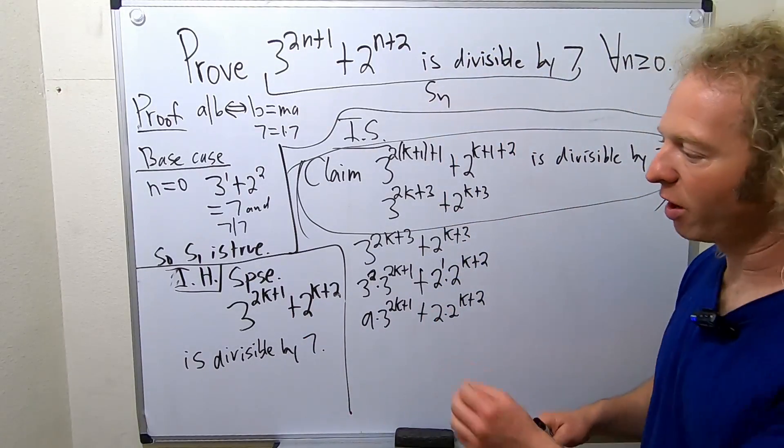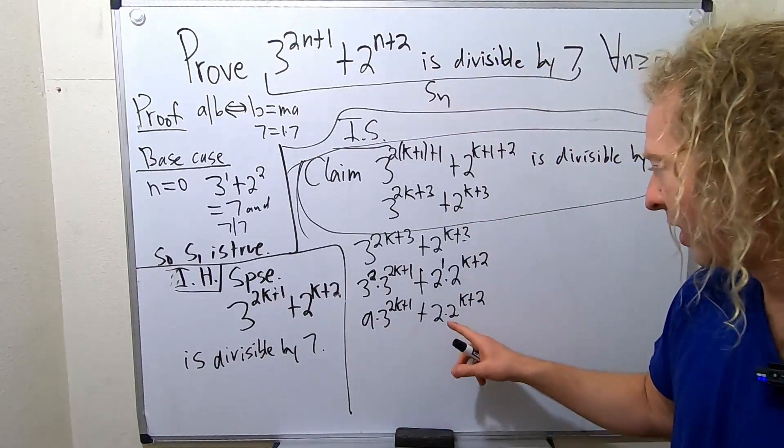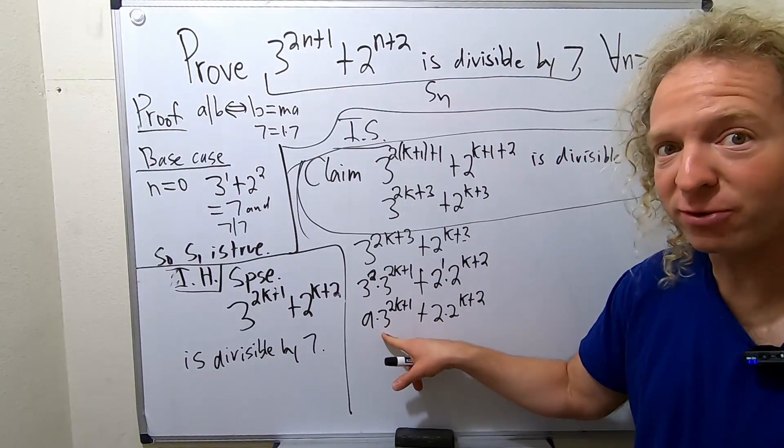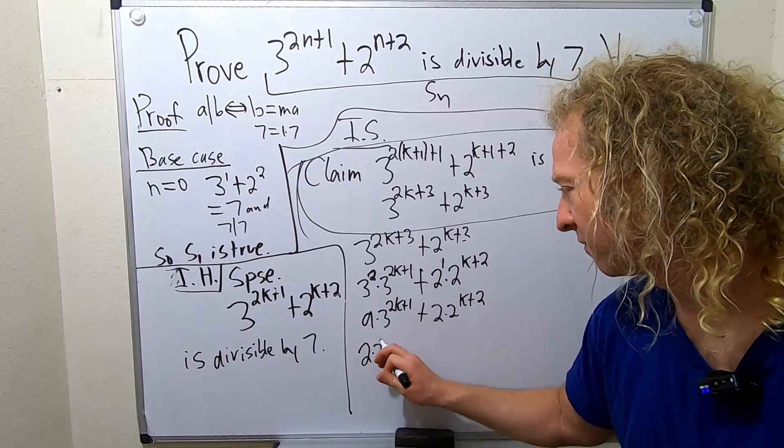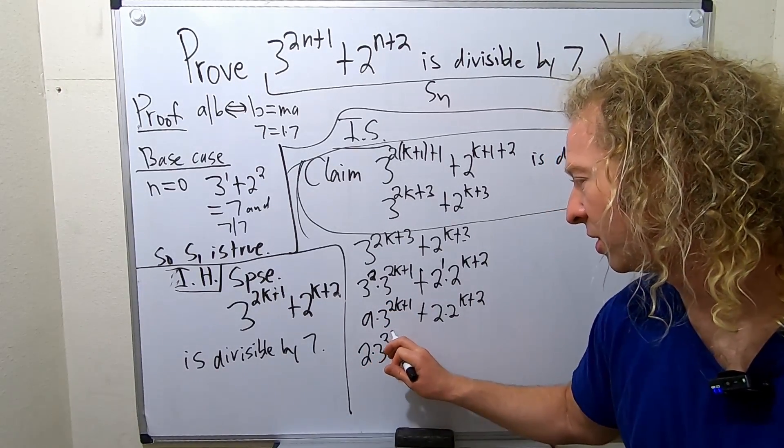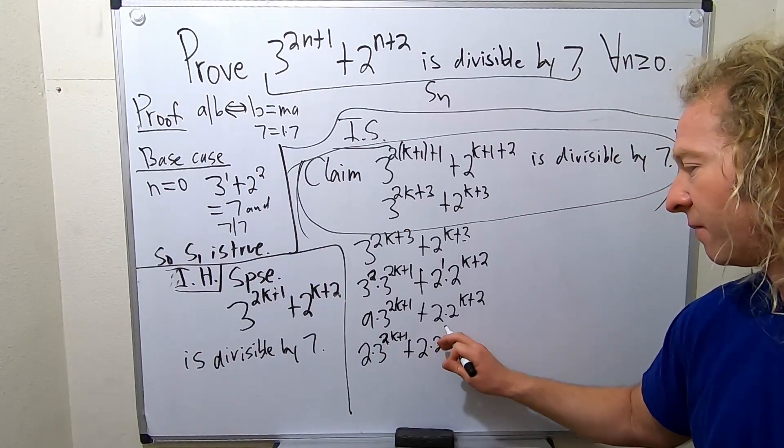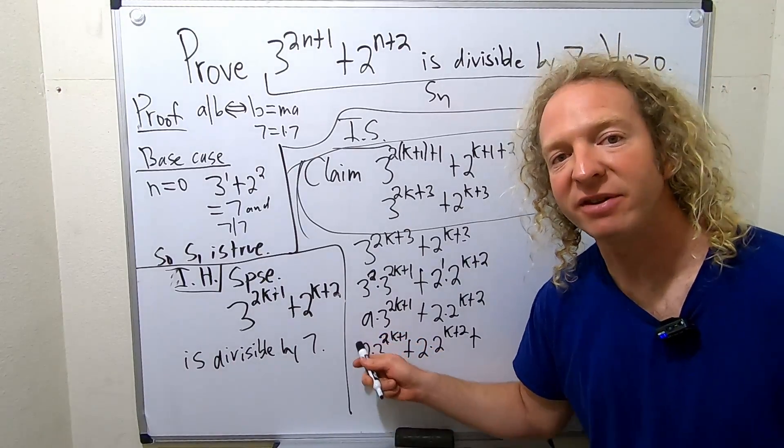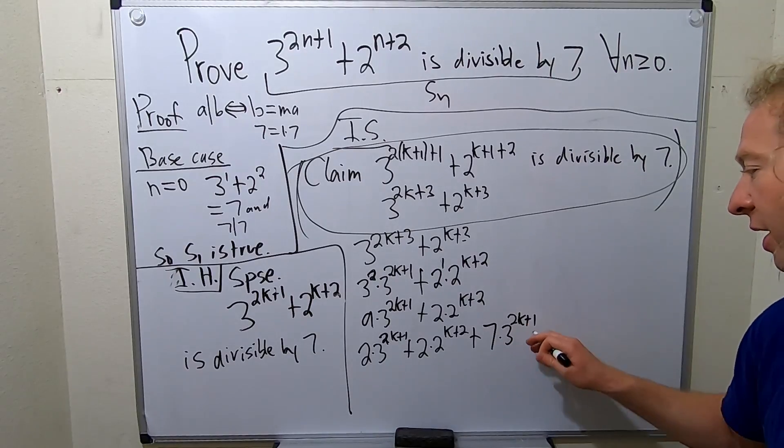It's divisible by 7. So if we have 1 of these and 1 of these, we get a multiple of 7. We have 2 of these here. We have 9 of these here. So we can borrow 2 from this. So watch this. I'm going to take 2 of these, 2k plus 1, plus 2 of these, plus, so we're missing 7 of these, right? This is probably like, whoa, what's going on? Check it out.